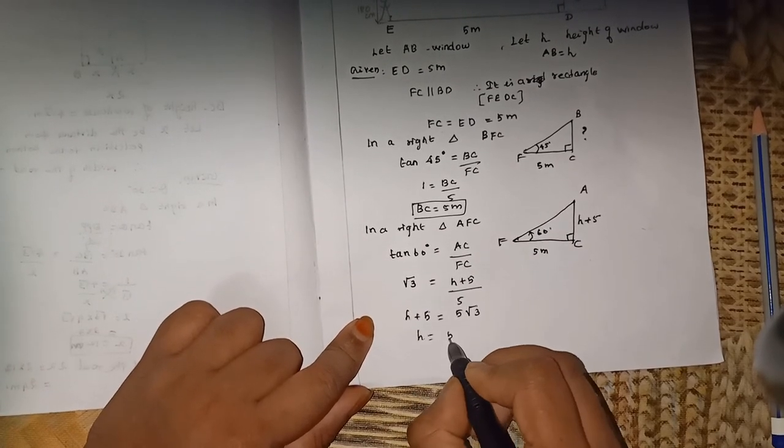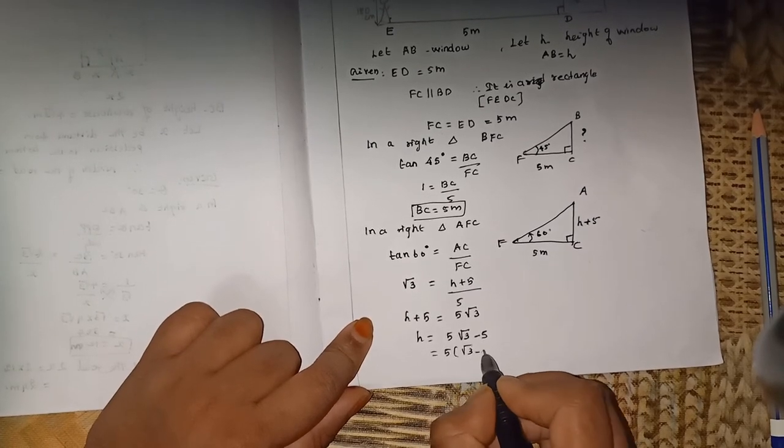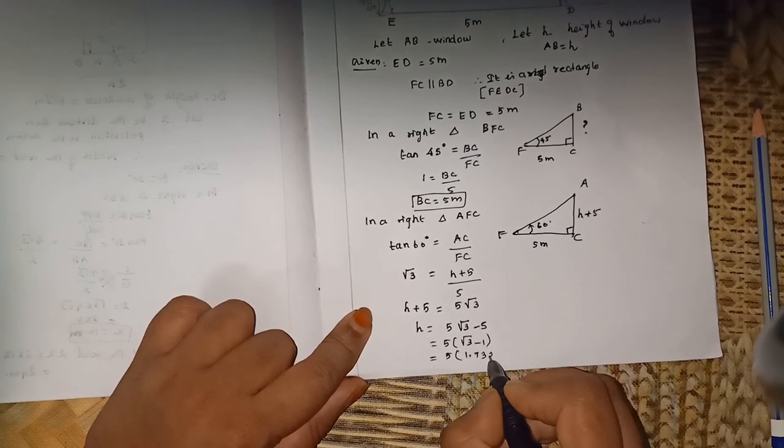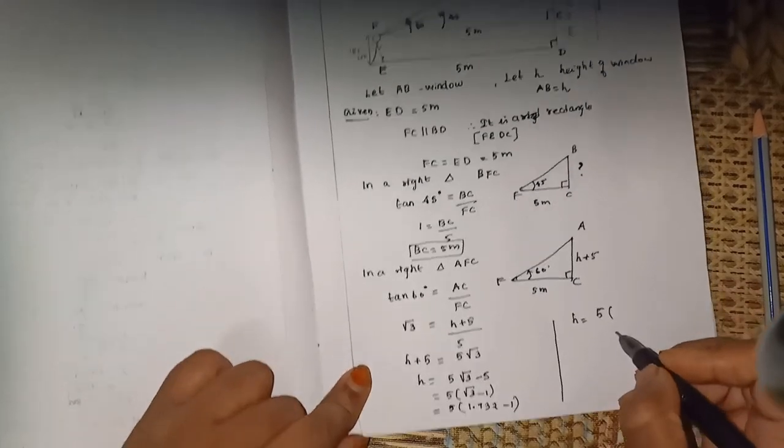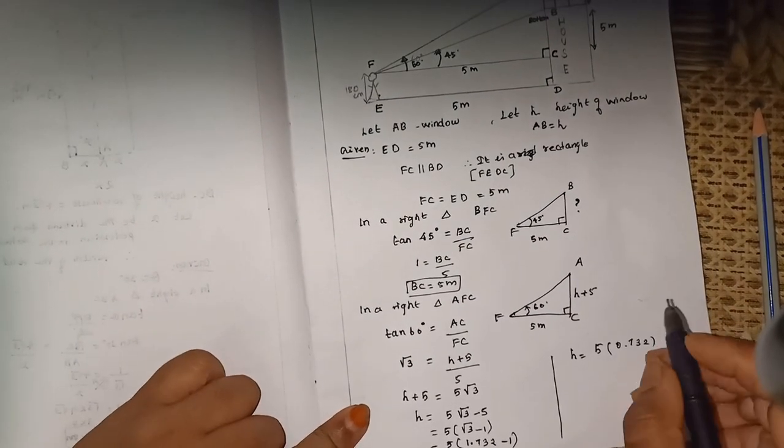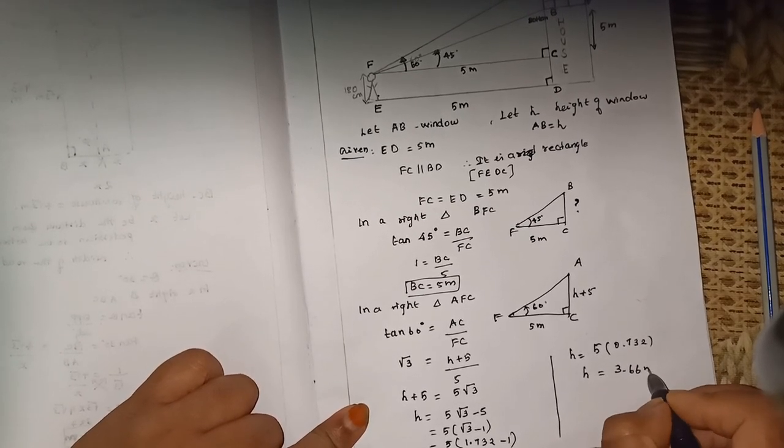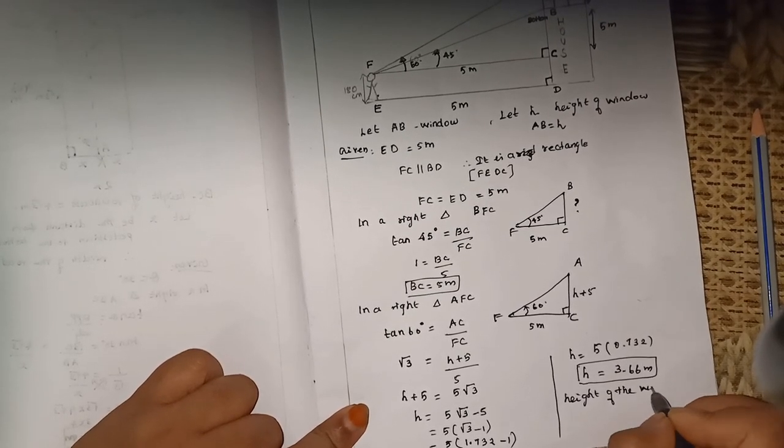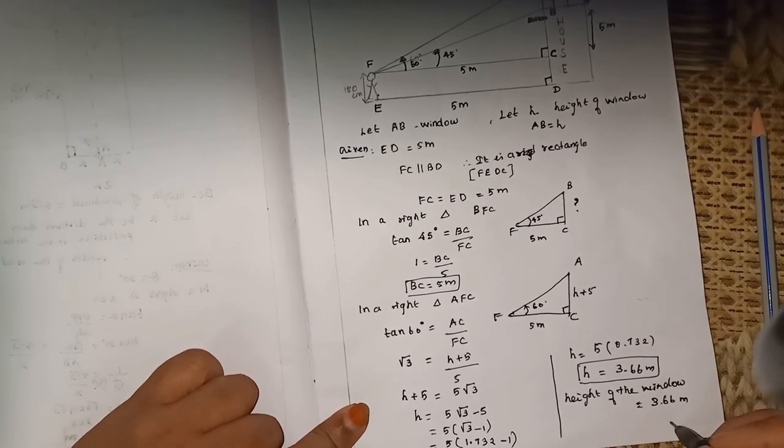So now H is equal to 5 root 3 minus 5, which is 5 common: 5 times (root 3 minus 1). Root 3 value is 1.732 minus 1, so H equals 5 times 0.732. Height of the window is approximately 3.66 meters.